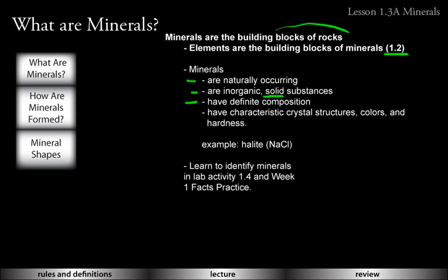Minerals have a definite composition, and that helps us identify them. We've talked about quartz — SiO2. When a scientist does an elemental analysis and figures out that for every two oxygens there's one silicon, they're confident that material is quartz and not calcium carbonate or dolomite. Minerals also have a characteristic crystal structure, characteristic colors, and hardnesses. You'll be learning about mineral hardness in lab activity 1.4, and you're already familiar with some minerals from your lecture and facts practice.